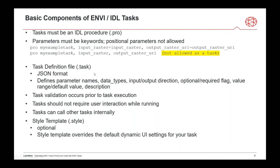Let's talk about the basic components of ENVI and IDL tasks. First, it has to be an IDL procedure, not a function — that's a limitation. The parameters on that procedure must be keywords, not positional parameters. So the top line here with `input_raster` and `output_raster_uri` are keywords — that's the structure you'd create. If you have a routine with positional parameters, you have two choices: convert them to keywords, or create a lightweight wrapper around it that is the task itself and calls your original procedure.